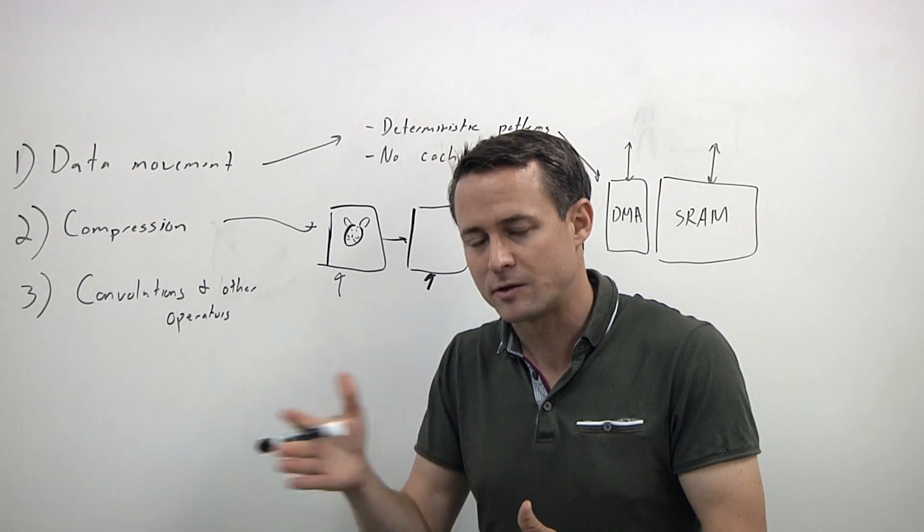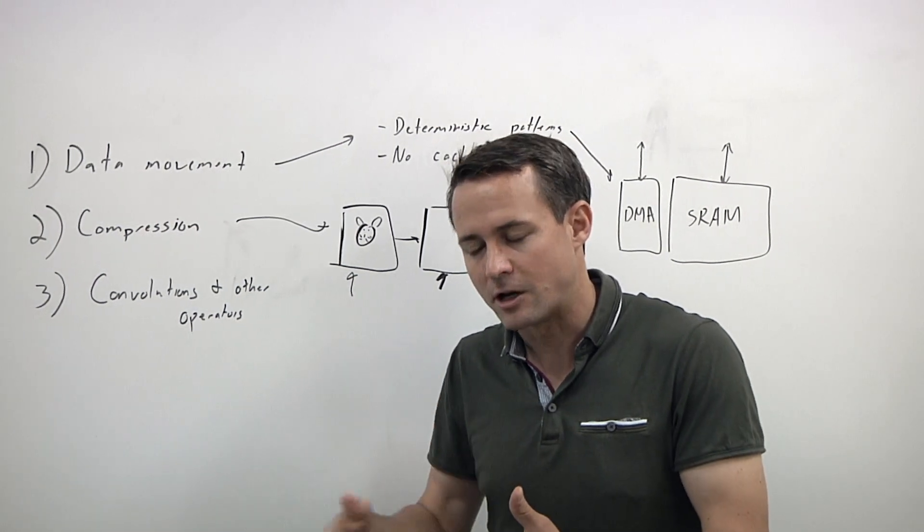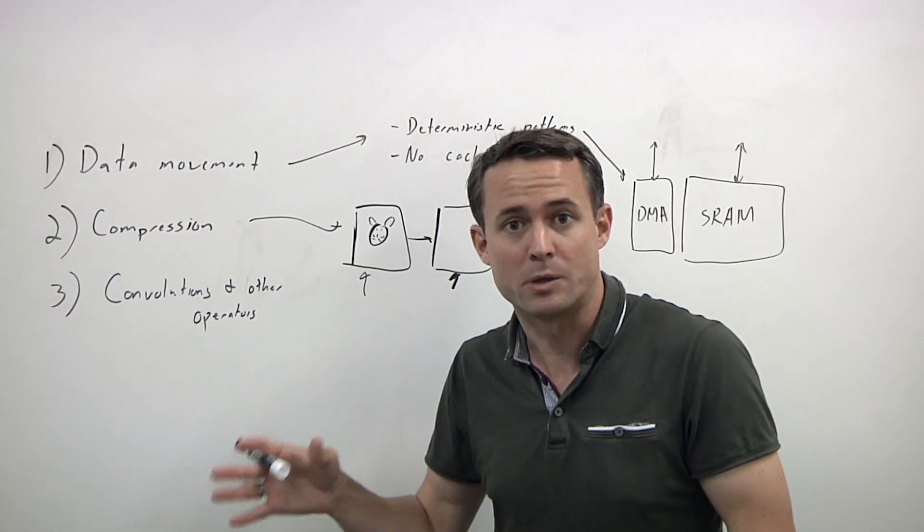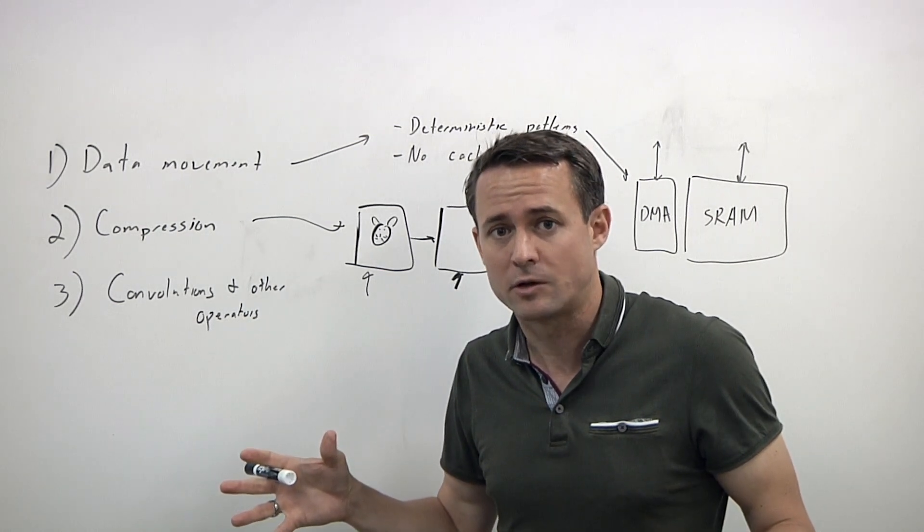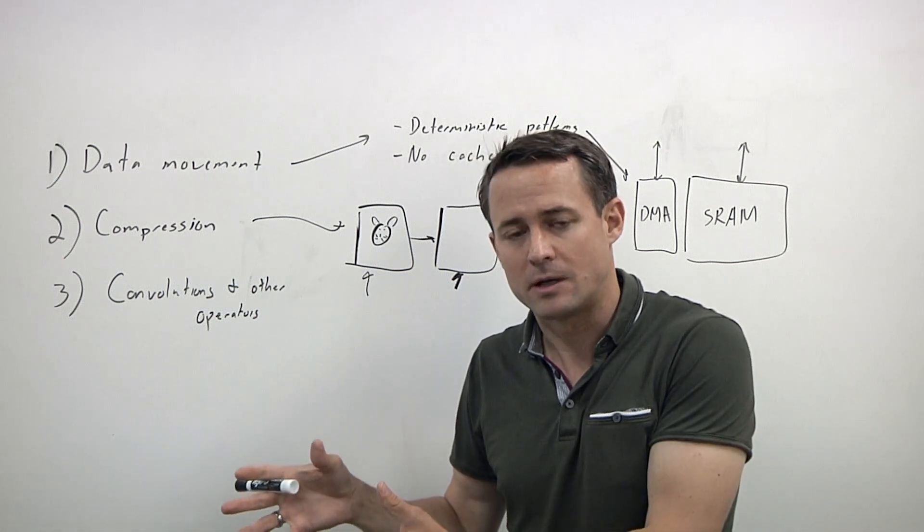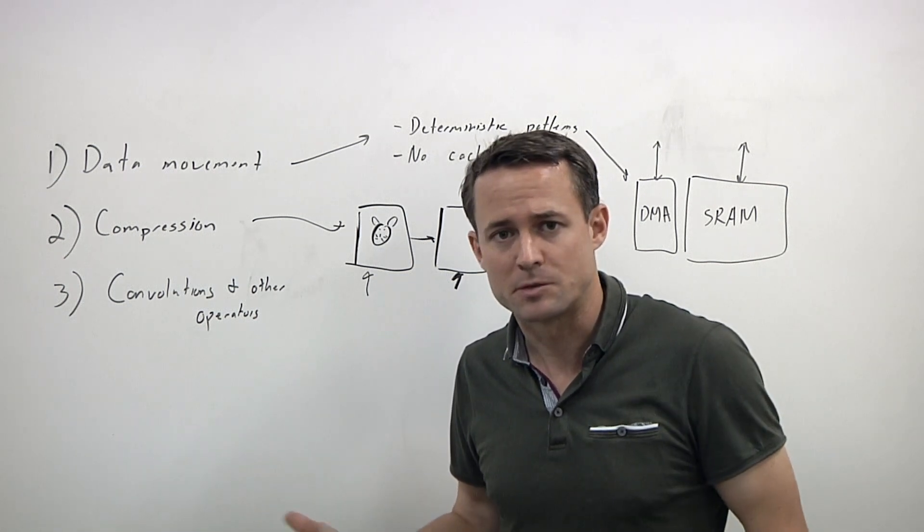The main difference you see across problems is not the computation, but rather just the throughput requirements. The throughput requirements for a self-driving car machine learning are going to be way higher than doing some simple speech recognition in your smart speaker.